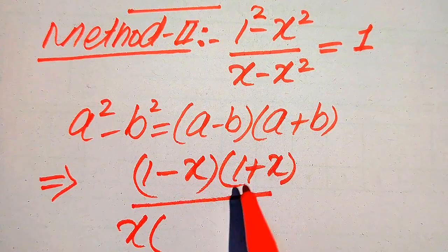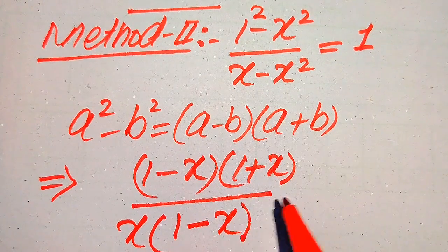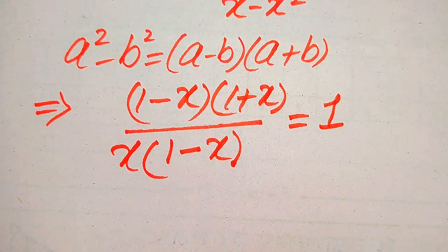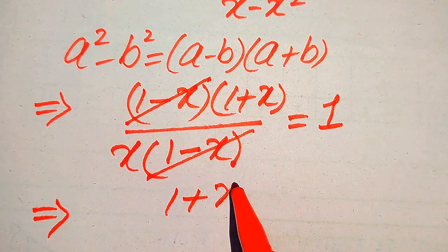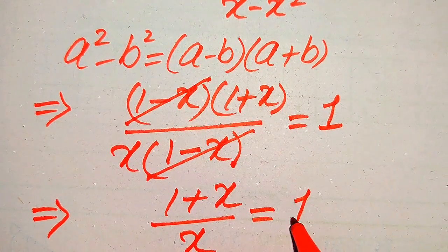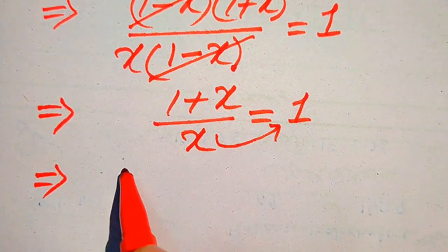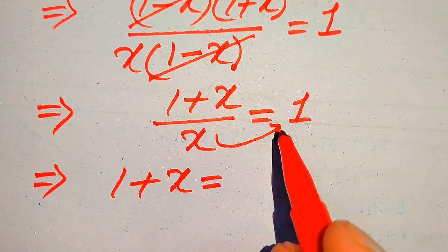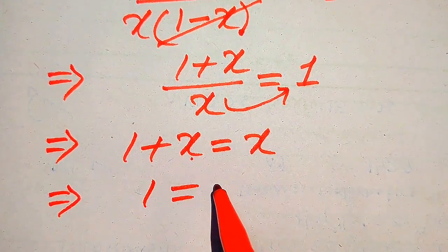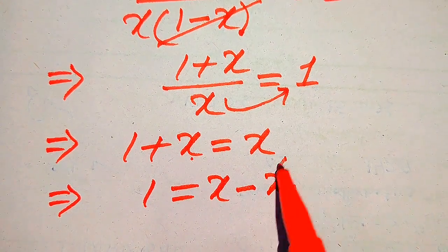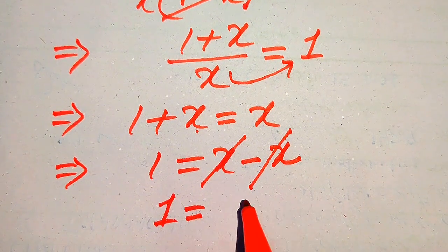We take x common in the denominator: x minus x squared becomes x(1 minus x). So the equation becomes (1 minus x)(1 plus x) divided by x(1 minus x) equals 1. The (1 minus x) terms cancel, giving (1 plus x) divided by x equals 1. Cross multiplying, 1 plus x equals x. Moving x to the right hand side: 1 equals x minus x, so 1 equals 0.